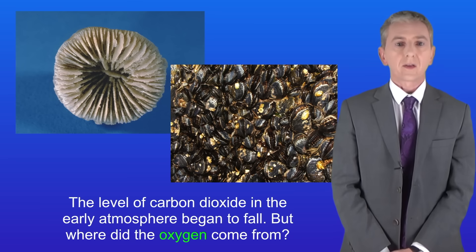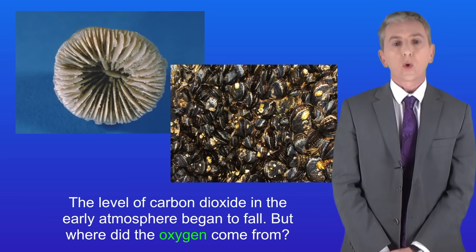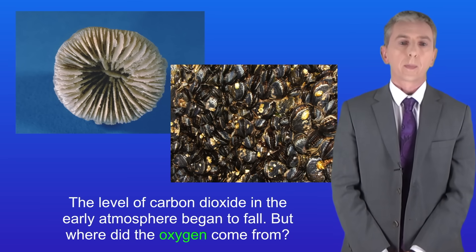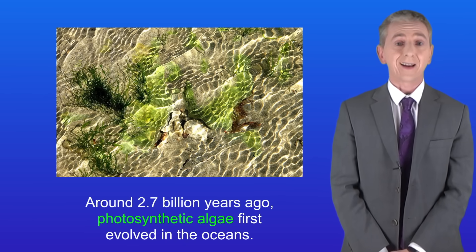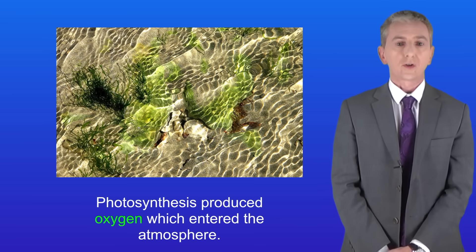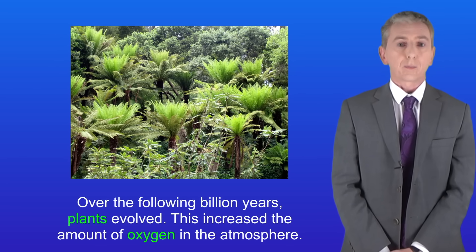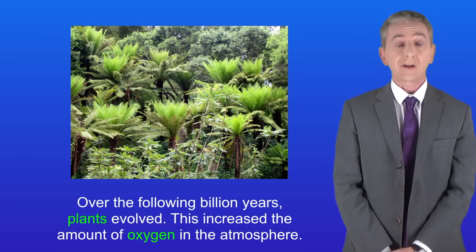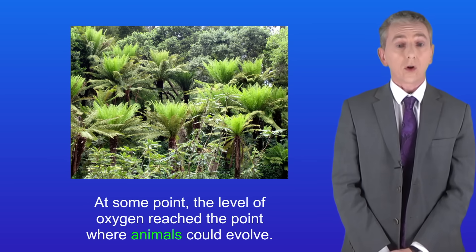So the level of carbon dioxide in the early atmosphere began to fall. Around 2.7 billion years ago, photosynthetic algae first evolved in the oceans. Photosynthesis produced oxygen which entered the atmosphere, and over the following billion years plants evolved, increasing the amount of oxygen further. At some point the level of oxygen reached the point where animals could evolve.